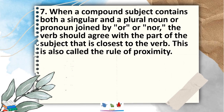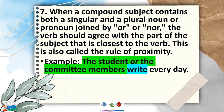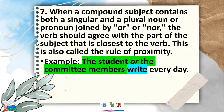Rule 7: when a compound subject contains both a singular and a plural noun or pronoun joined by 'or' or 'nor,' the verb should agree with the part of the subject that is closest to the verb. This is also called the rule of proximity. For example, 'The student or the committee members write every day.' Since we follow the closest subject to the verb, which is 'members,' and members is plural, it takes a plural verb: 'write.'